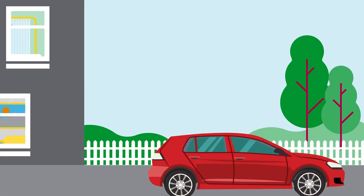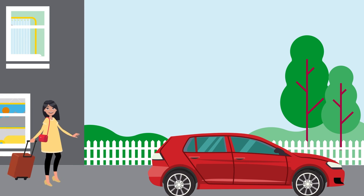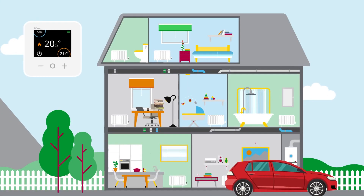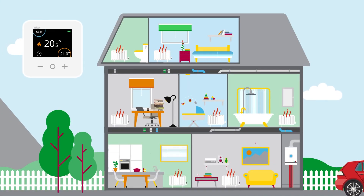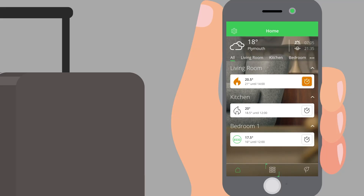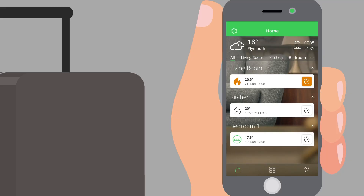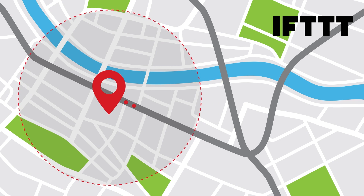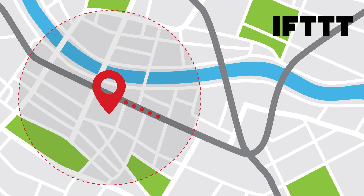If your customers have a less regular schedule, away mode stops them wasting energy and money by heating an empty home. Away mode will override existing schedules and reduce the set point to a default temperature with a quick tap of the toggle button. It can be automatically activated when customers leave their home when used with geo-fencing via IFTTT.